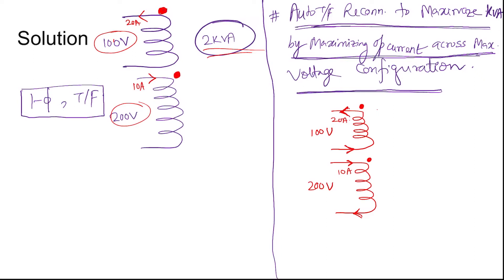And then if you connect it and tap it across the maximum voltage winding, then you see these two currents are adding: 20 ampere and 10 ampere. There is no phase shift because 200 volt at angle zero, 100 volt at angle zero, no phase shift.